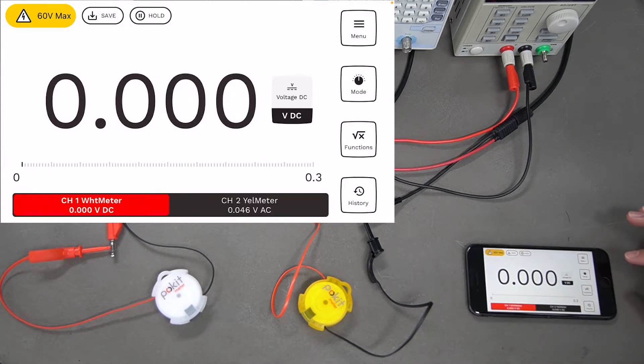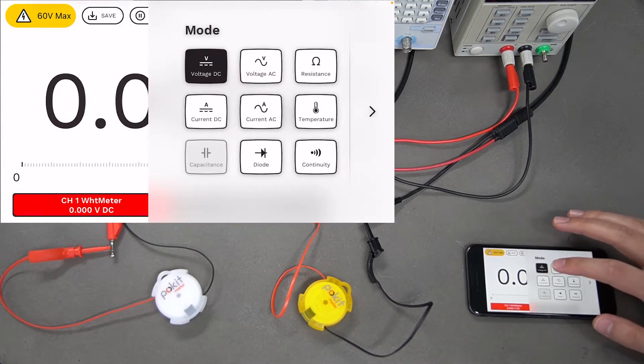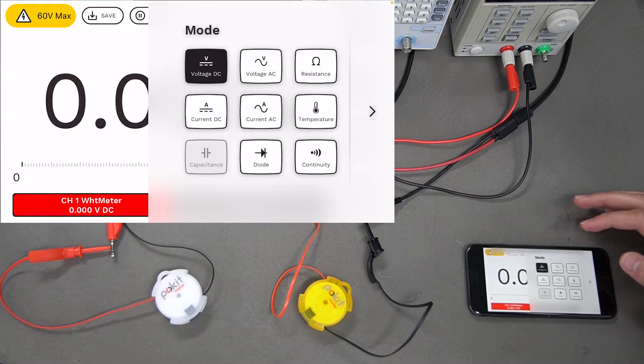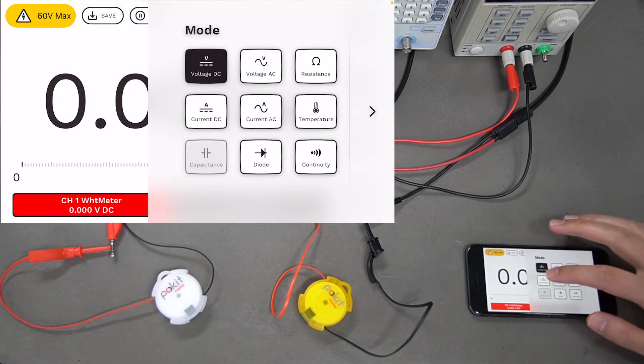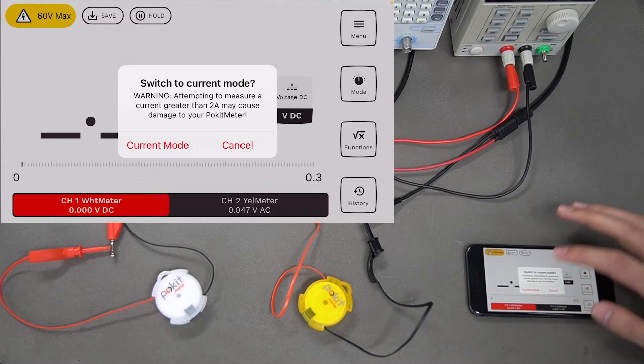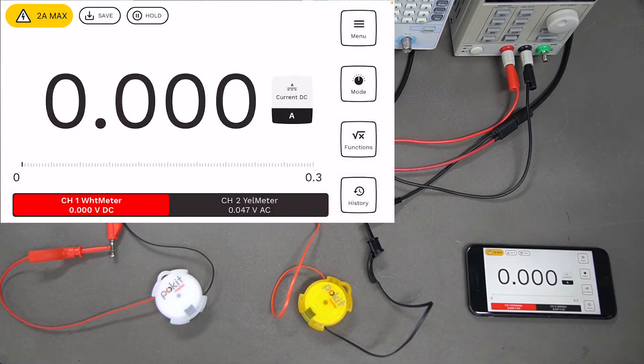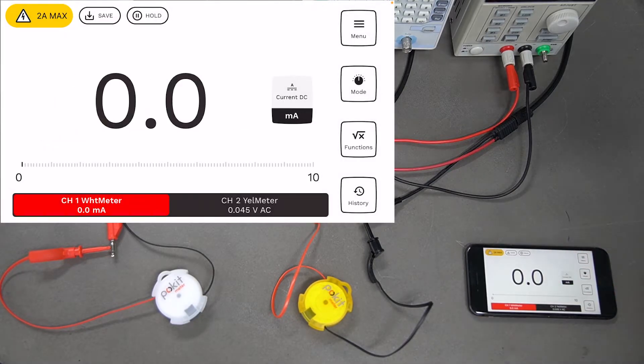We want to switch these over into current mode. The one on the left we'll put into current DC. You're going to get this warning here that tells you it can only measure up to two amps for pocket meter. You want to make sure you're not recording anything over that so you don't damage your unit.